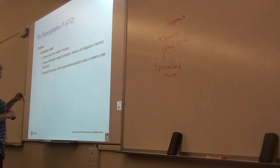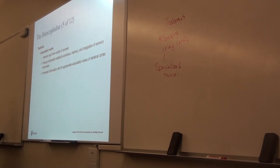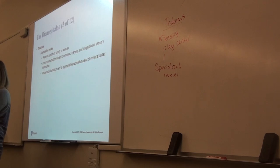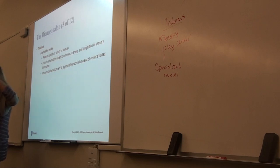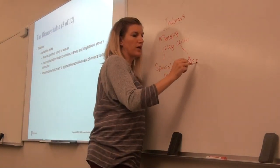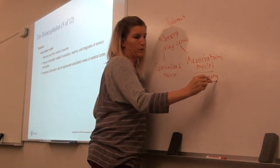There are also association nuclei in the thalamus, associated with different things like emotions and memory. This is why sometimes you'll see something — like a black object — and your thalamus helps you remember that this shape is a stapler. Your thalamus makes those connections, says we know what this black thing is, sends it up to the cerebrum, and the cerebrum can identify it as a stapler. So there are specialized nuclei and association nuclei for memory, etc.